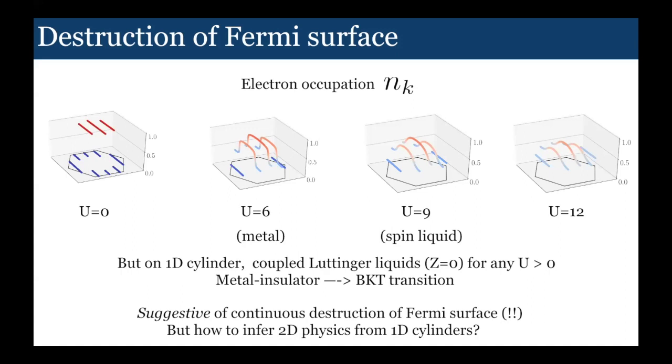What we should see, instead of a jump in N(K), is actually power law singularities or non-analyticities. If you analyze it quantitatively, that's what you find. You can see that in the metal there's some non-analytic kink, whereas by the time you get to the spin liquid, it appears to be perfectly analytic. When we look at that, it's consistent with this metal-insulator transition actually being a BKT transition. This is interesting because it suggests that you have a continuous destruction of the Fermi surface, at least in 1D, but it's a little bit unclear how you would infer the actual 2D physics from these 1D KT transitions.